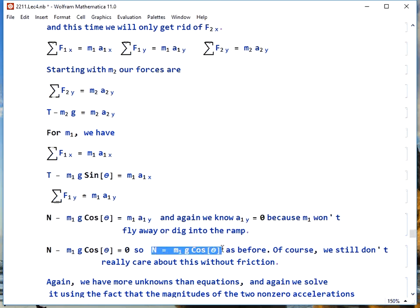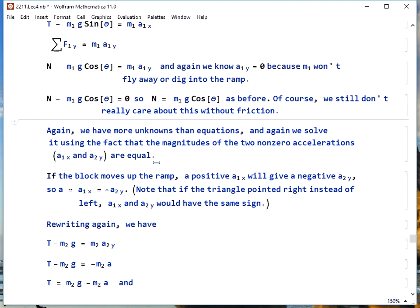We end up with N equals m1g cosine theta. Still true, still not very interesting for us until there's friction.